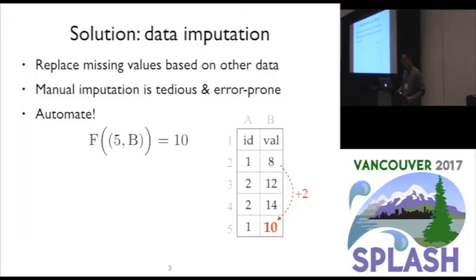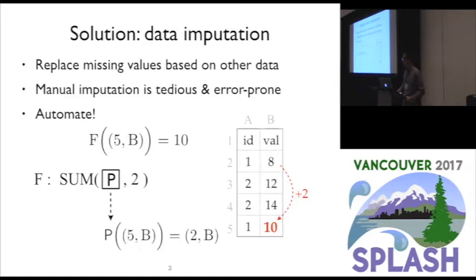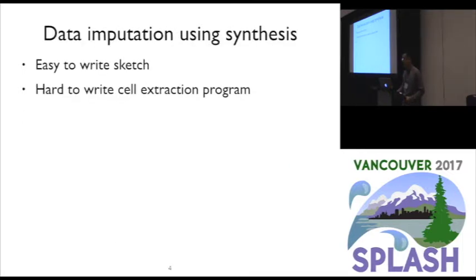To write this program, we know that it should add 2 to the value of some cell — in other words, we know the sketch of this program. However, filling the hole in the sketch is not easy because the hole itself is another program P that extracts some cell based on the input cell, the missing entry. Additionally, the program P could satisfy some constraints — in this case, P should produce the cell 2B given 5B as the input cell. We have studied a dozen online posts about data imputation, and our finding is that it is typically easy for end users to specify which operator to use, but very difficult for them to express the general cell extraction logic. They tend to use input-output examples to describe what they have in mind.